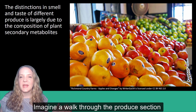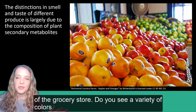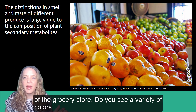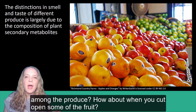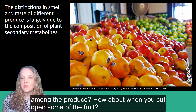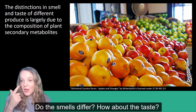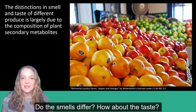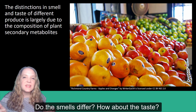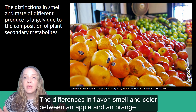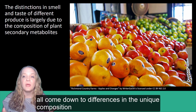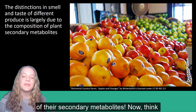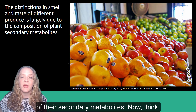Imagine a walk through the produce section of the grocery store. Do you see a variety of colors among the produce? How about when you cut open some of the fruit? Do the smells differ? How about the taste? The differences in flavor, smell, and color between an apple and an orange all come down to differences in the unique composition of their secondary metabolites.